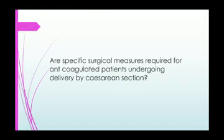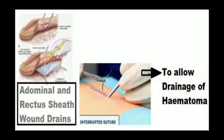For anticoagulated patients undergoing delivery by cesarean section, in a patient receiving therapeutic doses of low molecular weight heparin, wound drains — abdominal and rectus sheath — should be considered, and the skin should be closed with interrupted sutures to allow drainage of any hematoma.